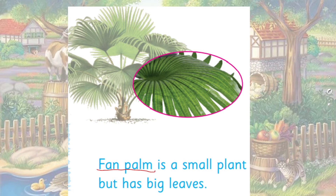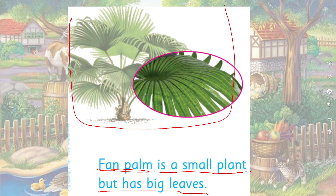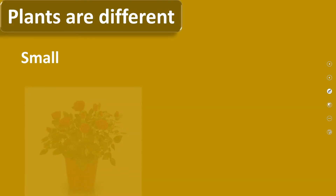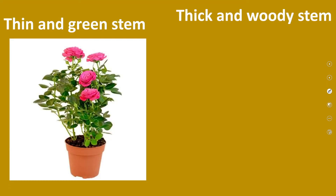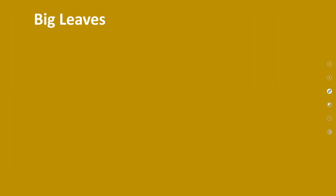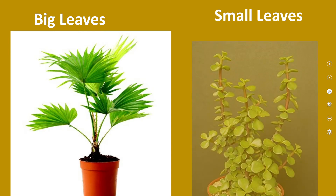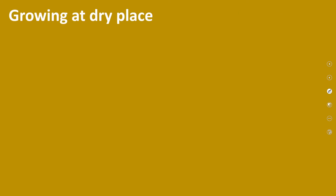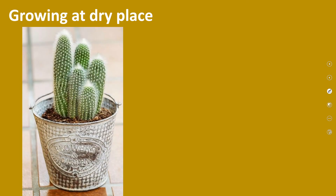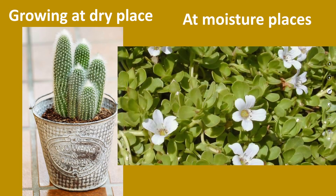Next, here you can see a fan palm. A fan palm is a small plant but has big leaves. It is not a very big tree. Its stem is green and thin, but the leaves that grow on it are very big. So, plants are different — some are small, some are large; some have thin and green stems, some have thick and woody stems; some have very big leaves and some have small leaves. Some plants have different growing places — some grow in dry places and some grow in moist places.